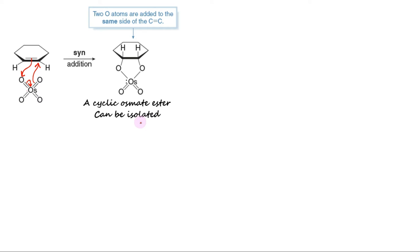The cyclic osmate ester that results can be isolated, and then treated with either aqueous sodium sulfite, Na2SO3, or sodium bisulfite, NaHSO3, to produce a diol.